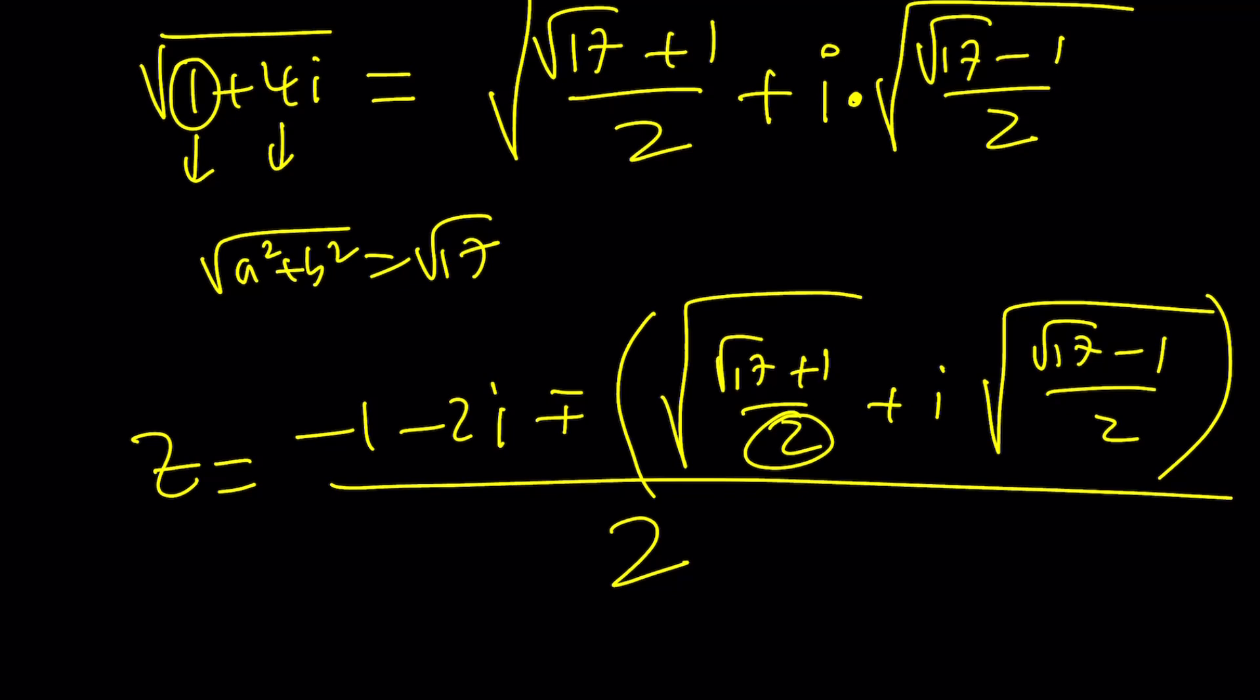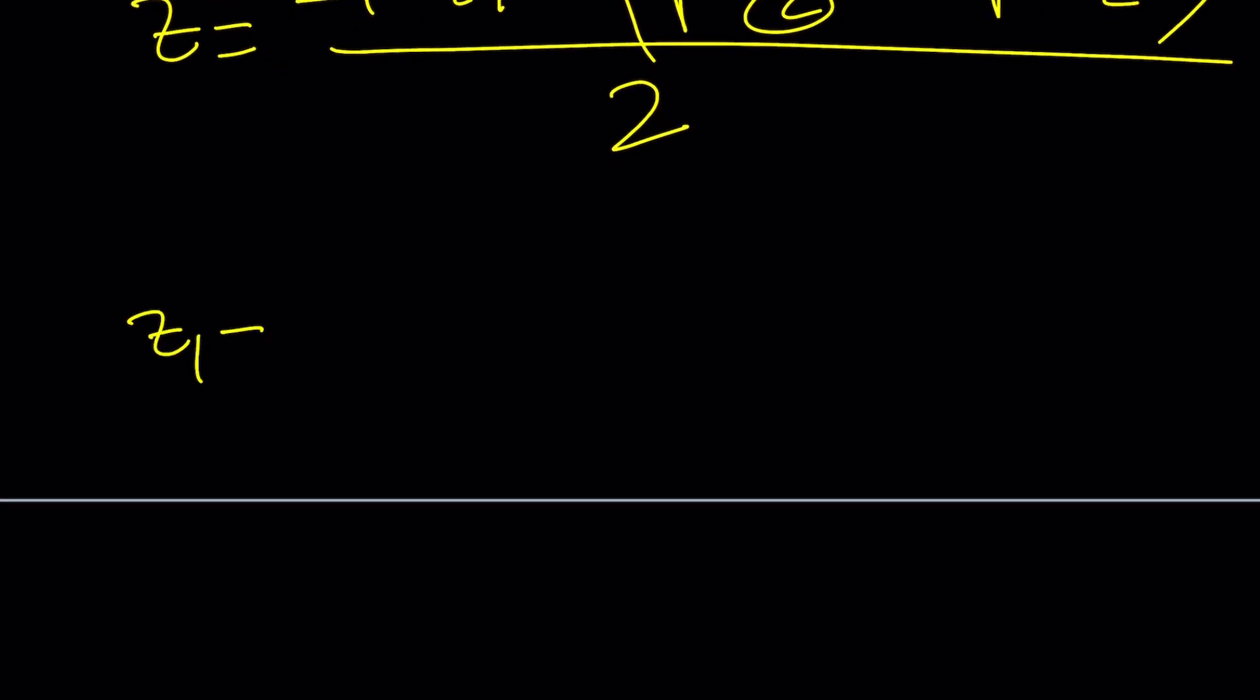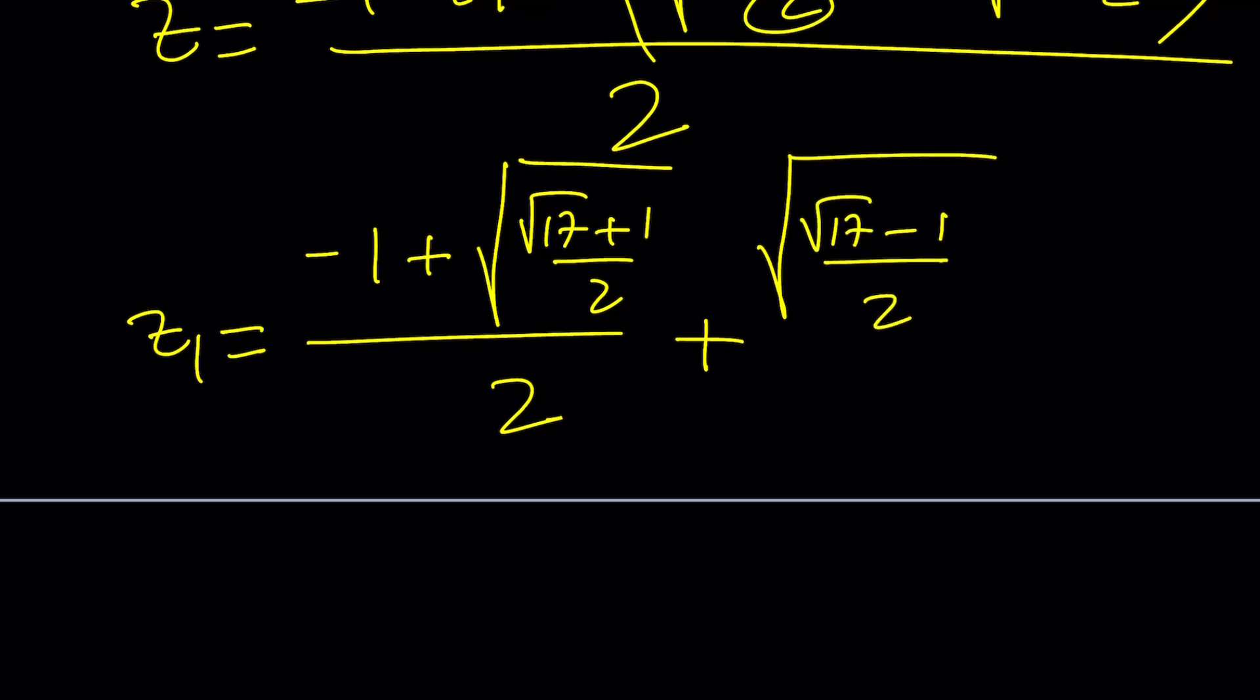If I wanted to write the solution separately there will be a bit more work, but let me show you one of them. One solution looks like this: negative 1 plus the square root of square root of 17 plus 1 divided by 2, divided by 2, then add the imaginary part. It's under the radical this time, the difference, and we subtract 2 from it, divide by 2, all multiplied by i. You can call this z sub 1, and z sub 2 is similar. Let me not tell you where the sign changes so you can figure it out. It's quite complicated.